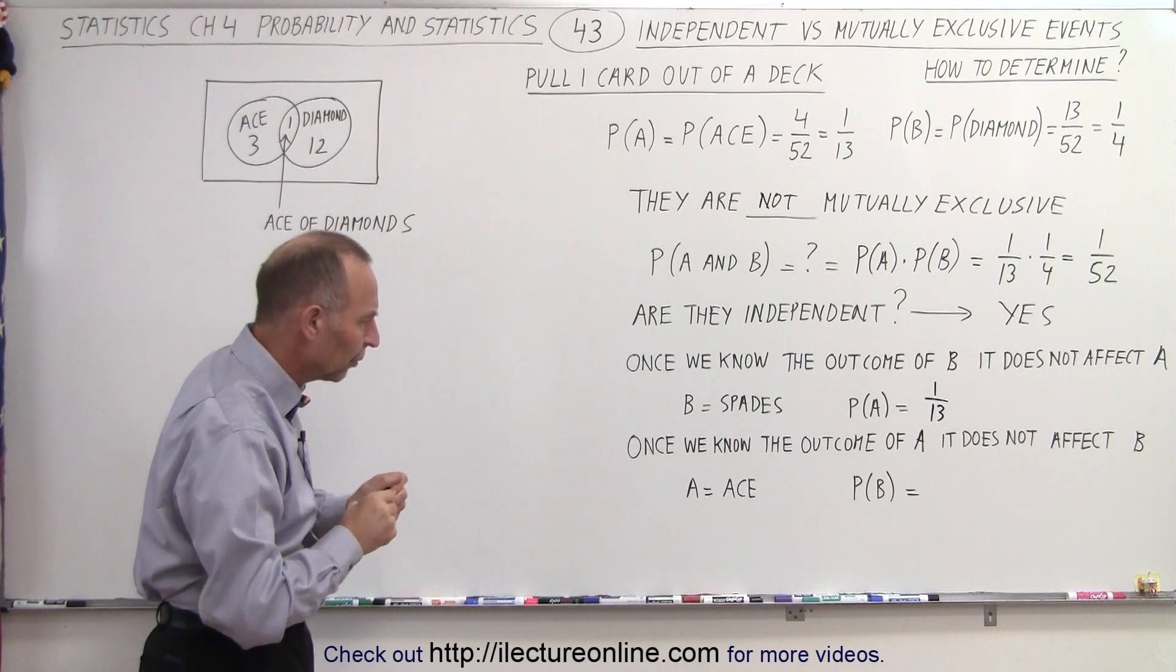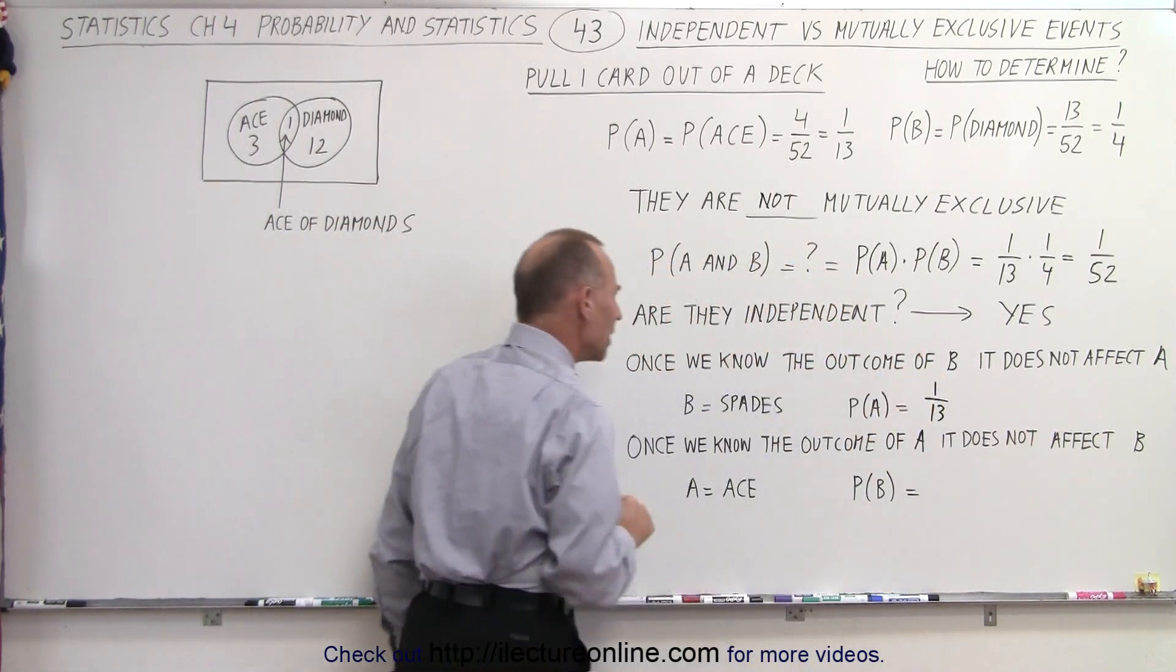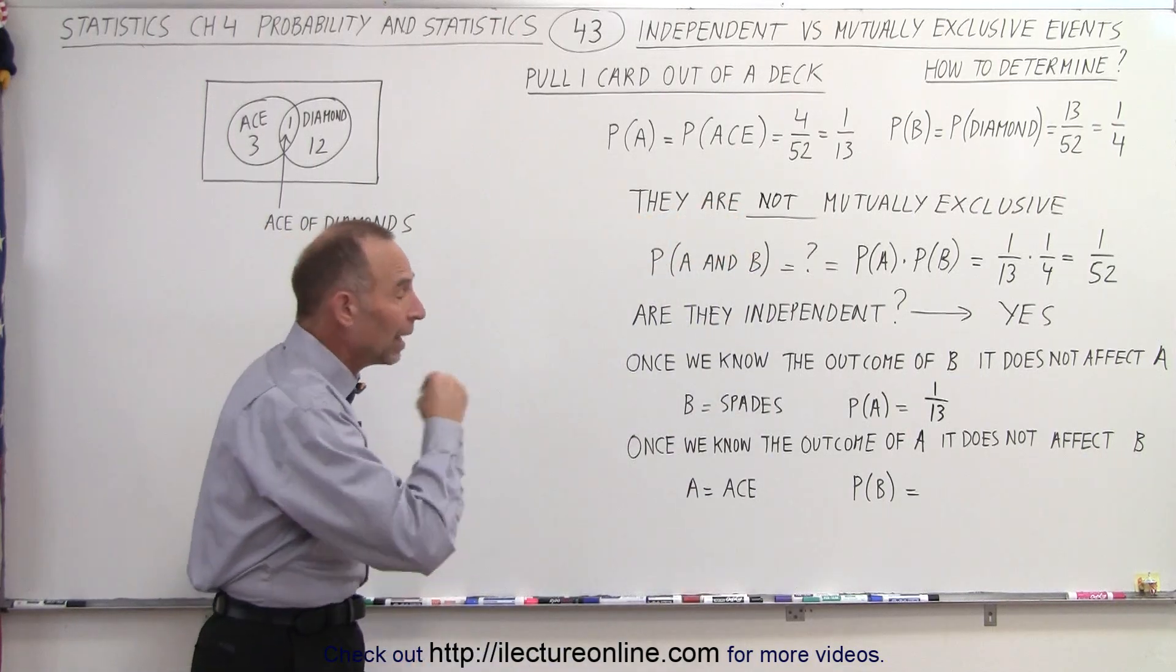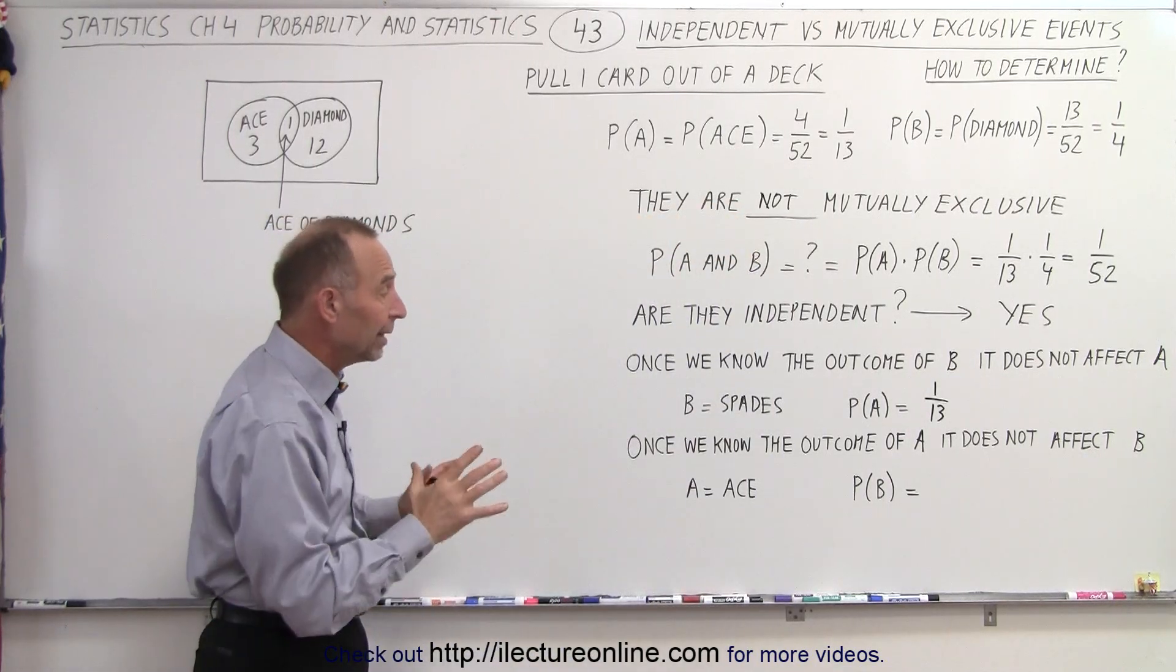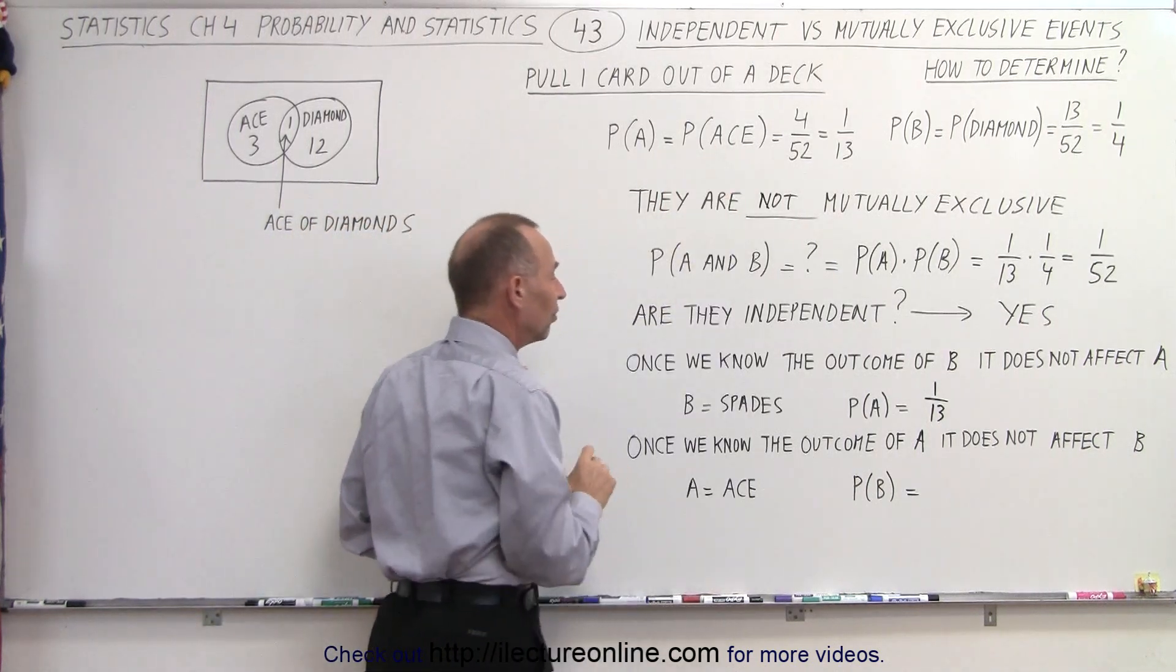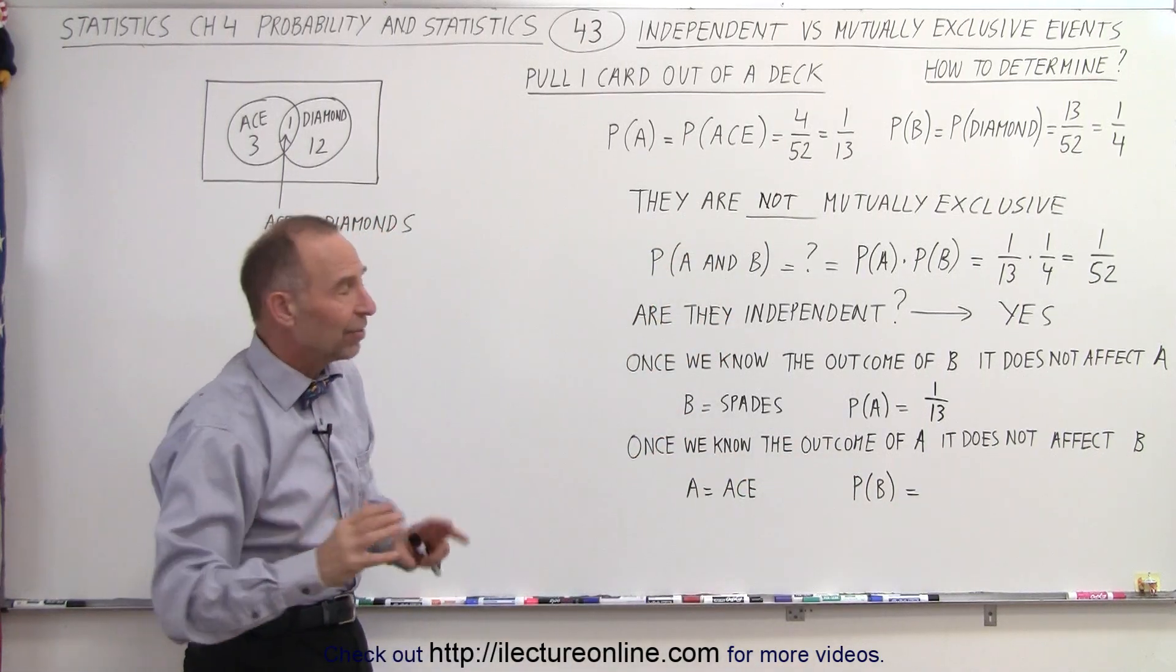How about the other way around? Once we know the outcome of A, does that affect the probability of B? So let's say we draw a card and indeed we got an ace. But we don't know anything else. We simply satisfy the probability that we got an ace. And so how does it affect B? It does not affect B at all because it can be any type of ace.